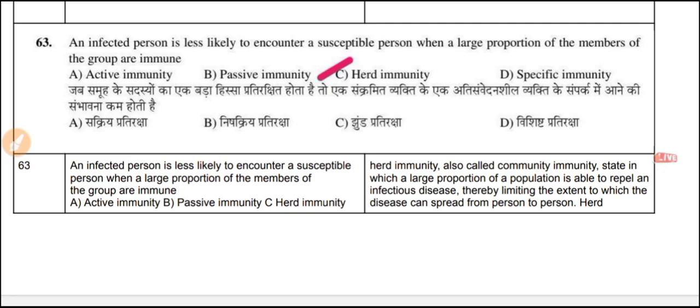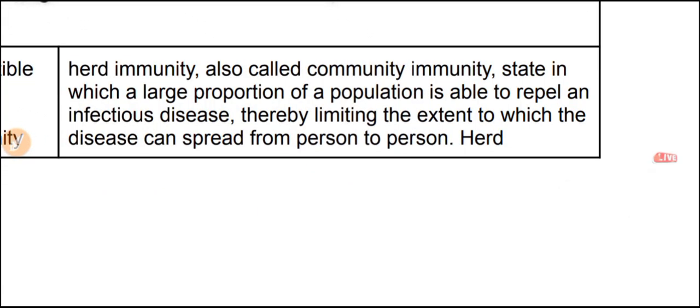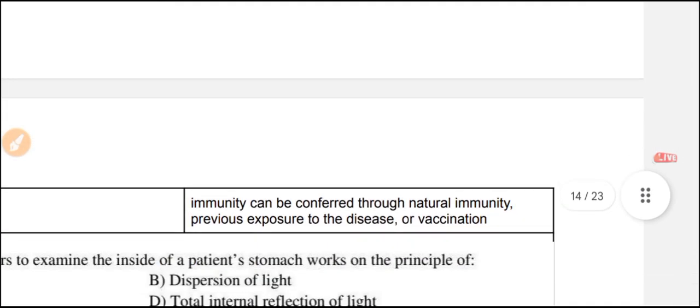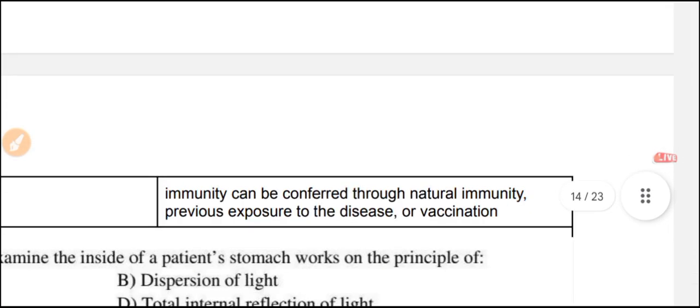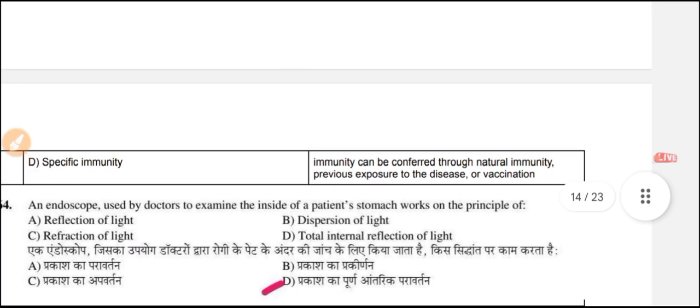Question 63: An infected person is less likely to encounter susceptible persons when a large proportion of members of a group are immune. The answer is herd immunity, also called community immunity — a state in which a large proportion of a population can repel an infectious disease, limiting the extent to which the disease can spread from person to person, either through natural immunity or vaccination.